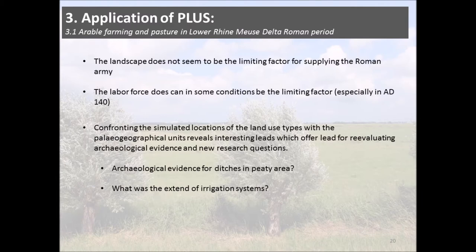However, we must note that the model has subdivided regions strictly, meaning it does not take into account that people from areas with sufficient labor force would travel to work on neighboring rural settlements' lands. When confronting the simulated locations of land use types with paleogeographical units, interesting leads for reevaluating archaeological evidence are revealed — such as: is there evidence for ditches in the peat region? What was the extent of irrigation systems? Have these been found in the dune areas as well?